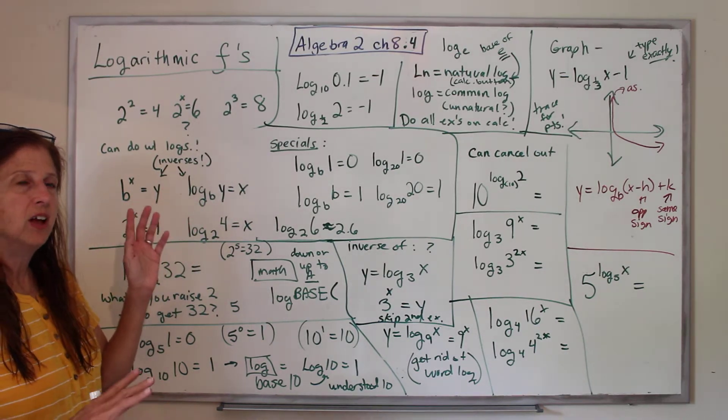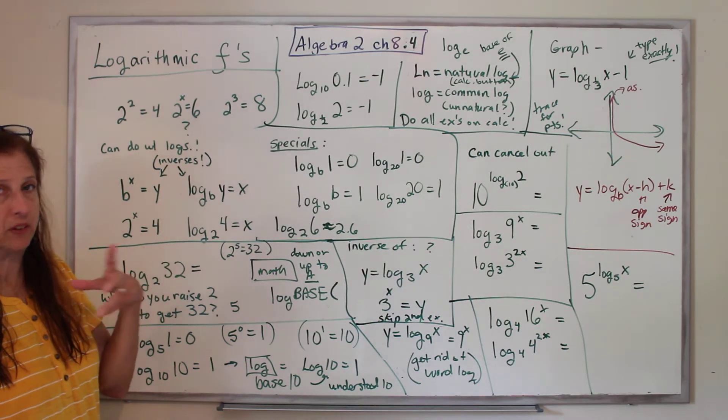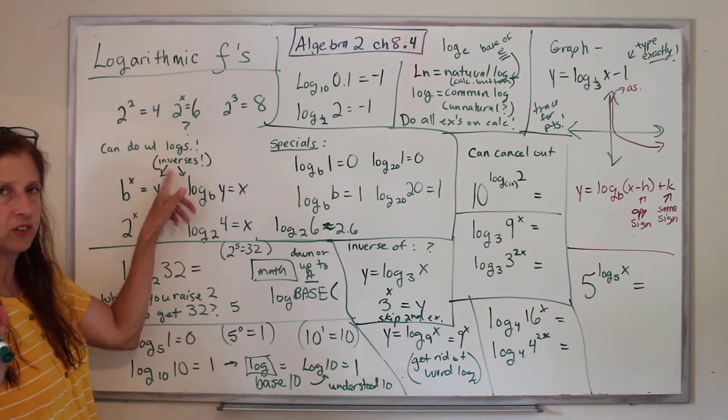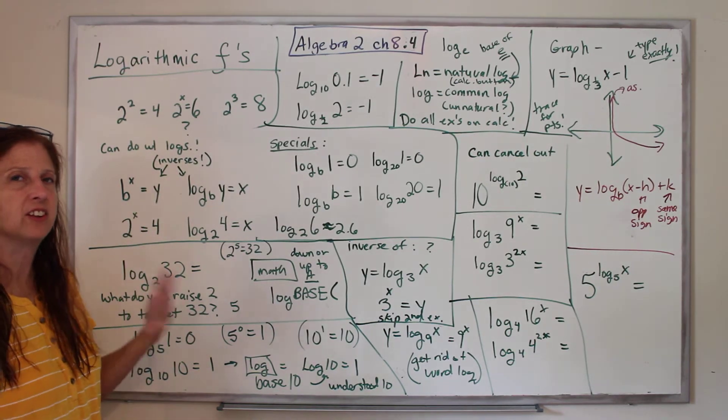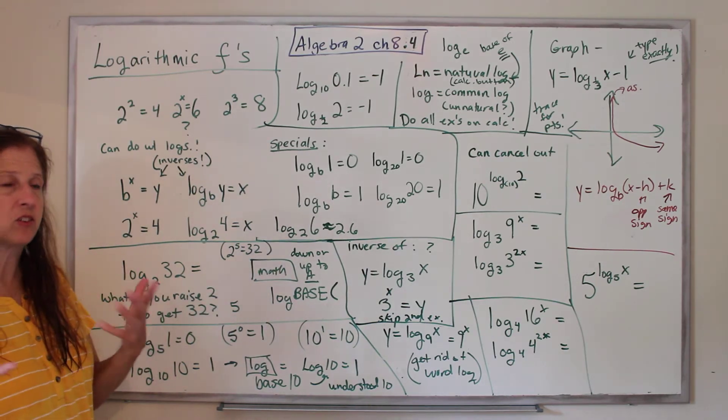Logs and exponents are another way of looking at their opposites in a way. They're inverses. So it turns out we can cancel them out, which is fun. This will make sense the more I show you.